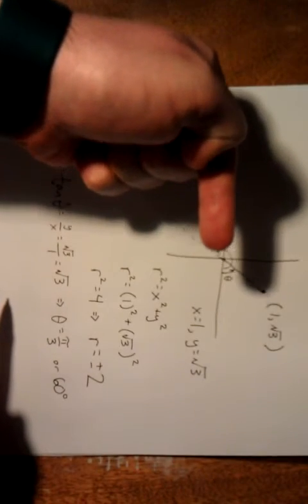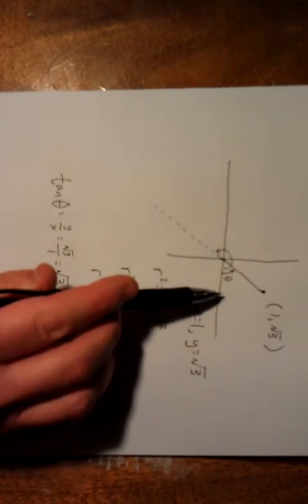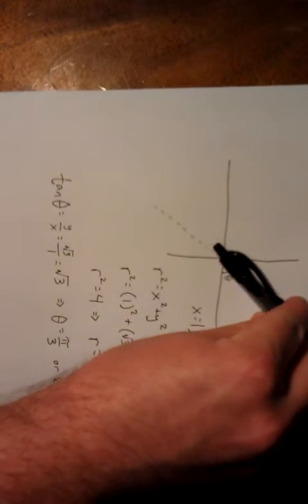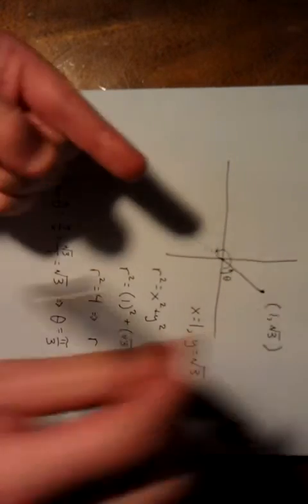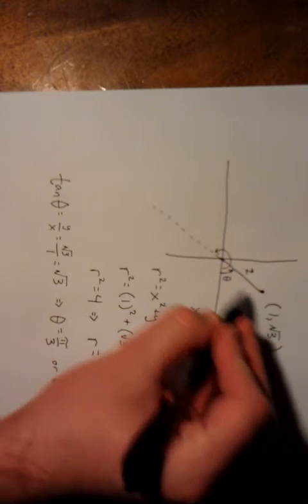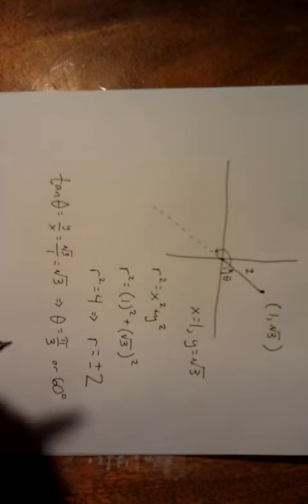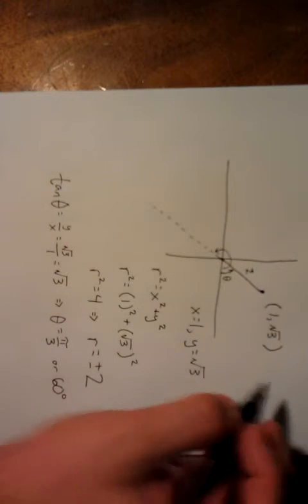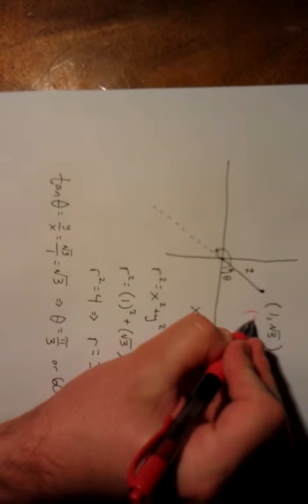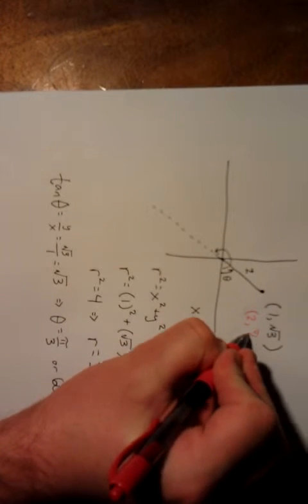So what this means for us is if we're starting at the origin, if we are located at the origin facing in the direction of the positive x-axis, we can rotate by 60 degrees or pi over 3 radians, and then walk straight forward by a total of two units to arrive at this point. This is not the only possibility for our angle here. I'm going to write the first possibility up here. So 2, pi over 3.